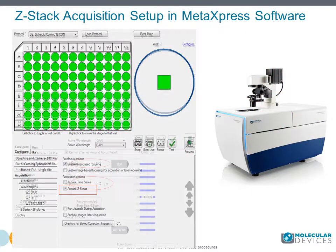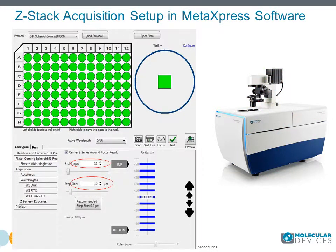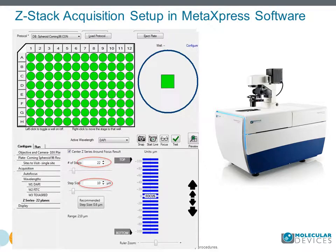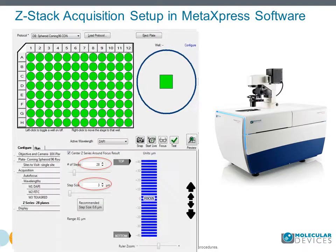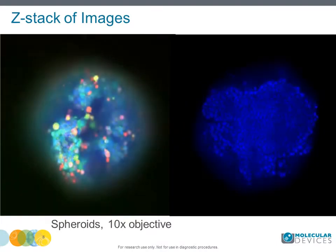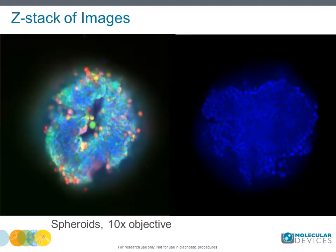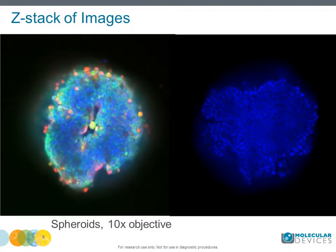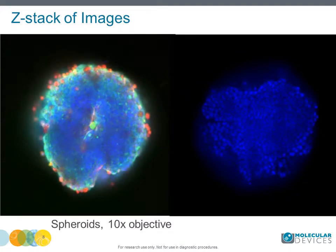Images should be taken using automated confocal mode with a large field-of-view camera. MetaXpress software allows modification of the number of z-planes and distance between planes. Using a 10x objective, you can capture 10–15 images with 10 micron distance, or more than 20 images with 5 micron distance.